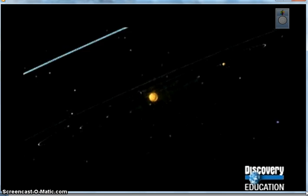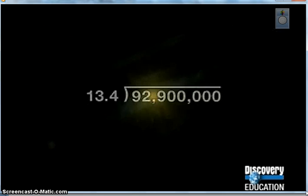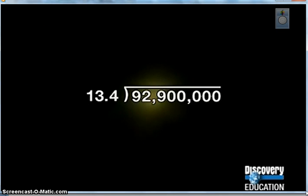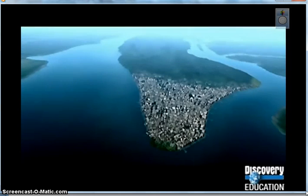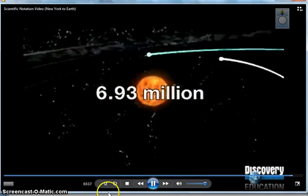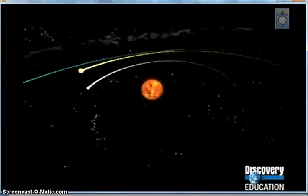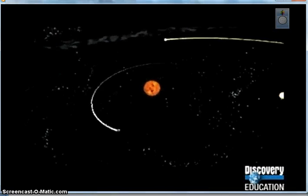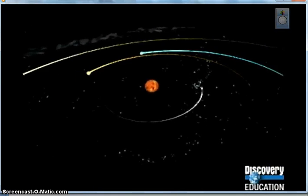Using scientific notation to divide is often simpler than doing the long division in expanded notation. This goes for multiplication, too. So, how far is it to the Sun? To find out, travel the length of Manhattan 6.93 million times at 60 miles per hour non-stop. That would take more than 176 years.